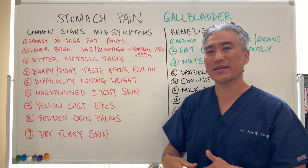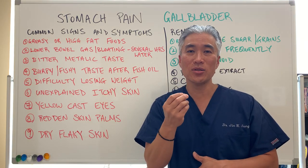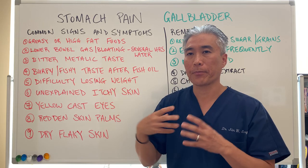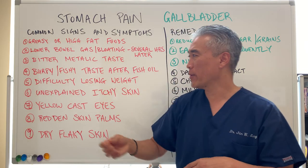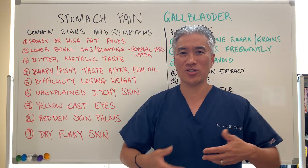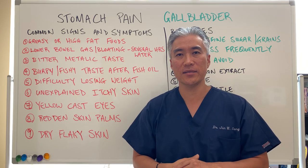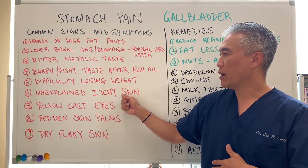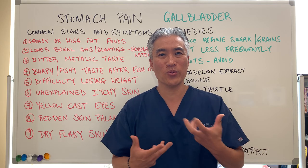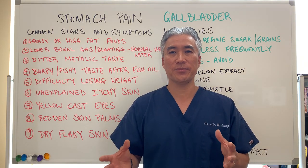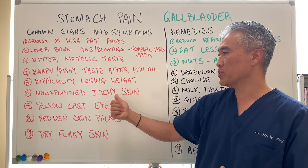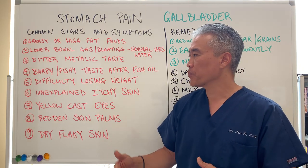You can also have a bitter metallic taste in your mouth, particularly in the morning. Another sign is a burpy or fishy taste in your mouth after taking fish oil. Some people say their fish oil just comes back up — oftentimes that indicates a gallbladder problem. Unexplained itchiness of the skin is another sign. You need to differentiate from allergies or skin conditions, but if you have some of these other symptoms alongside unexplained itching, it can be the gallbladder.